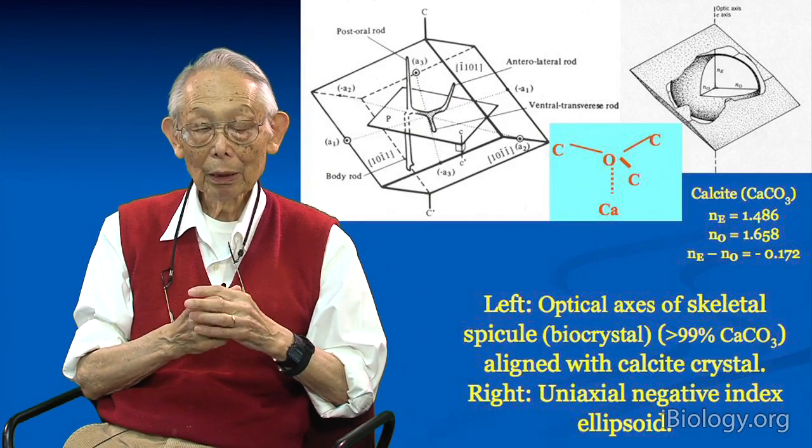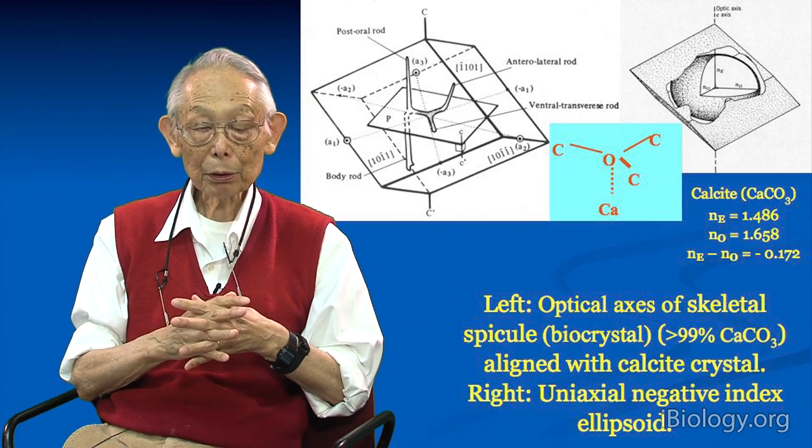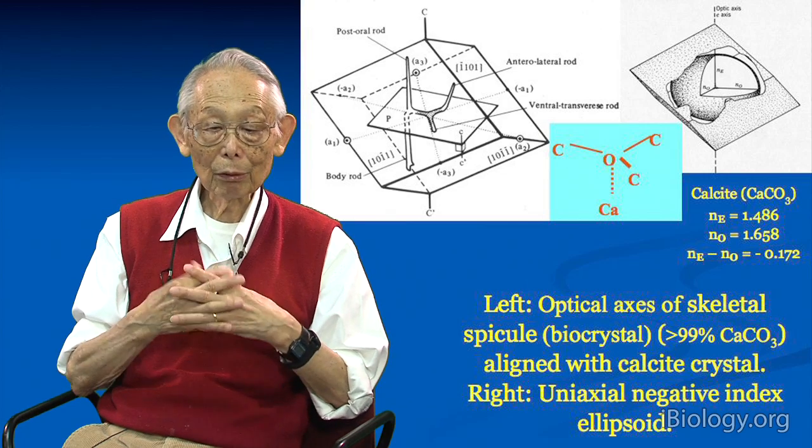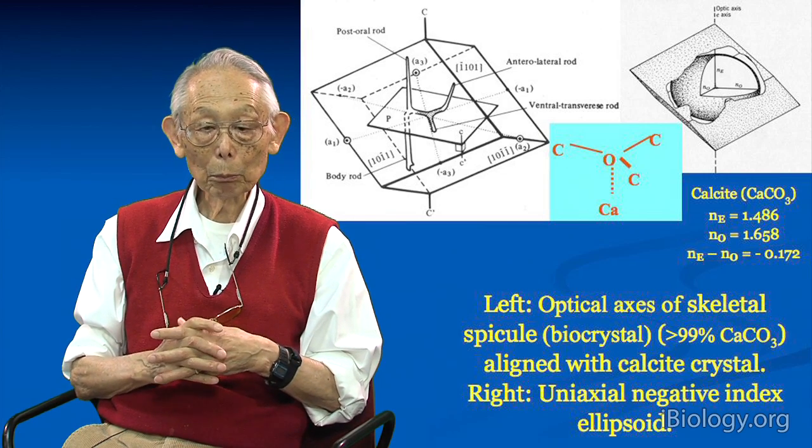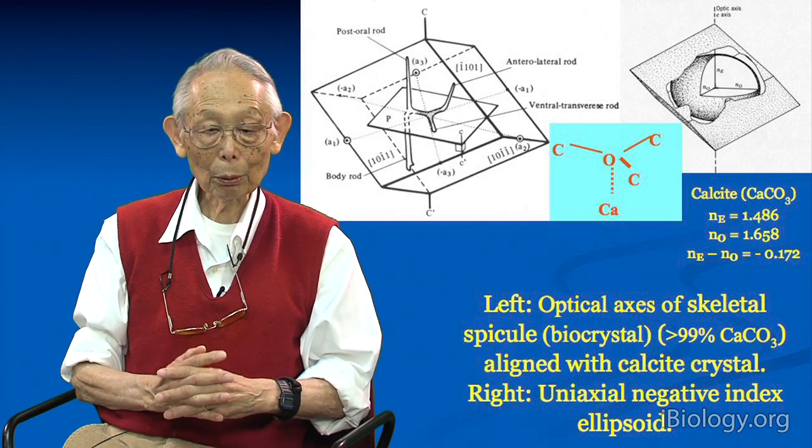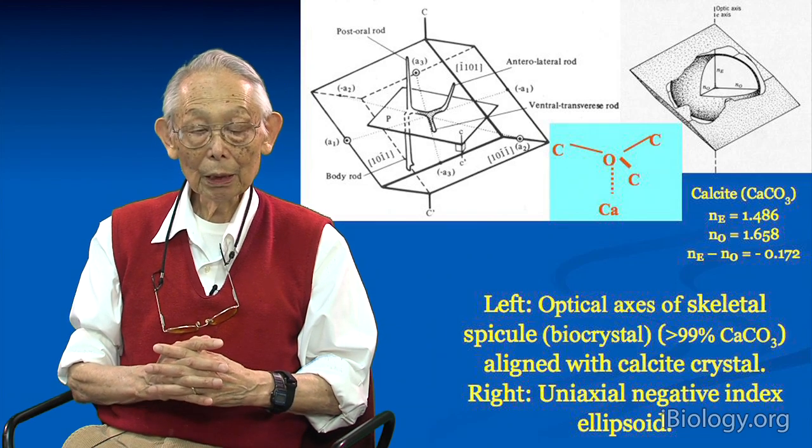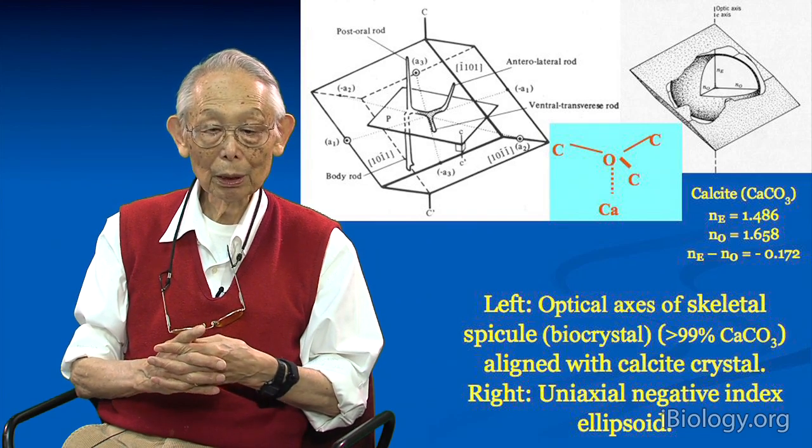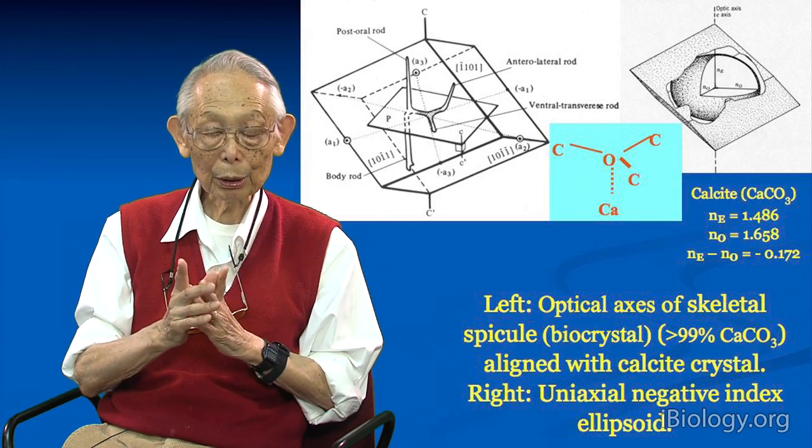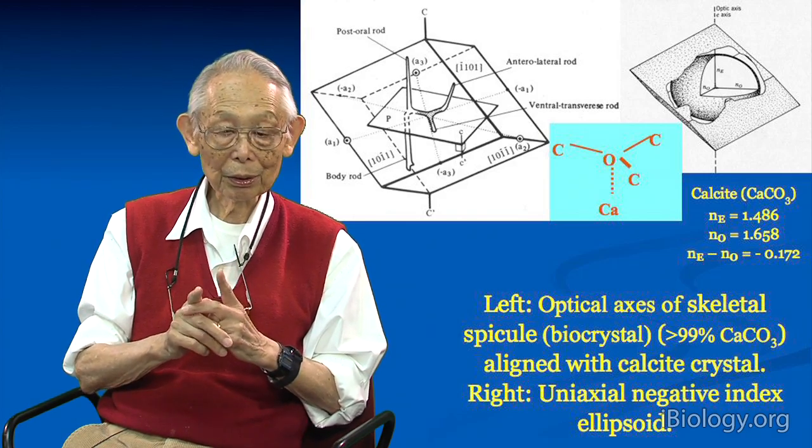Calcite is not only interesting as a special mineral that has strong birefringence, but it also occurs in many of our body structures, for example in bone and teeth. One of the mineral components is calcite. If we look at a sea urchin embryo, we see in a young embryo tiny little spicules which are made of pure calcite, and those show birefringence.